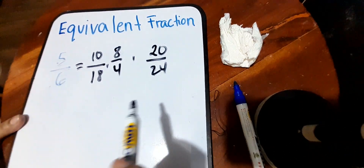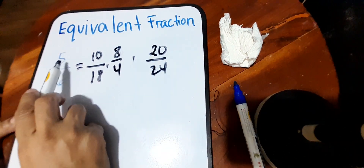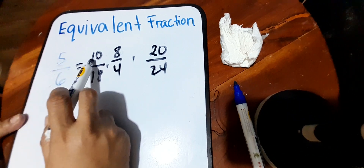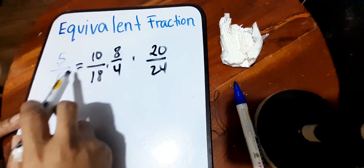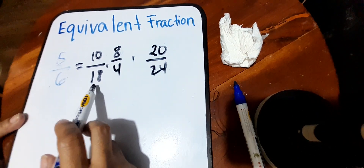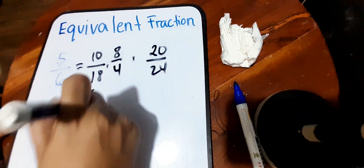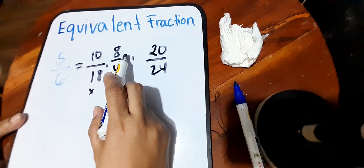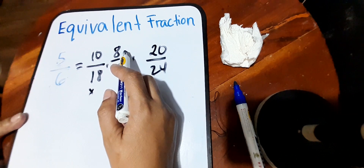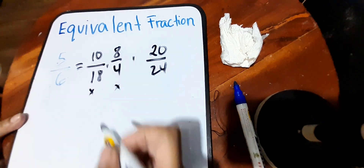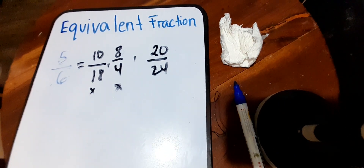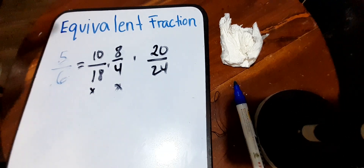We just need to find the number. For five to become ten, it should be multiplied by two. But when we multiply six by two, will it give you eighteen? No — so this is not an equivalent fraction. For five to become eight, is there any multiple of five that becomes eight? There's none. So this can't be an equivalent fraction of five-sixths. When we skip count by five — five, ten — eight is not a multiple of five.